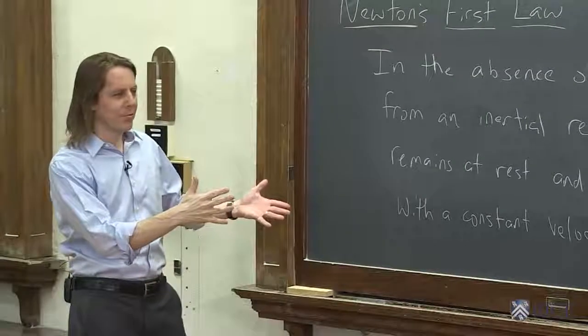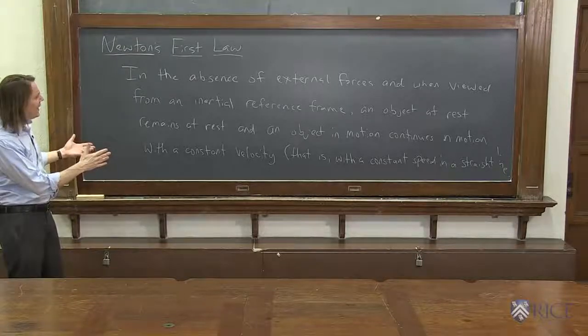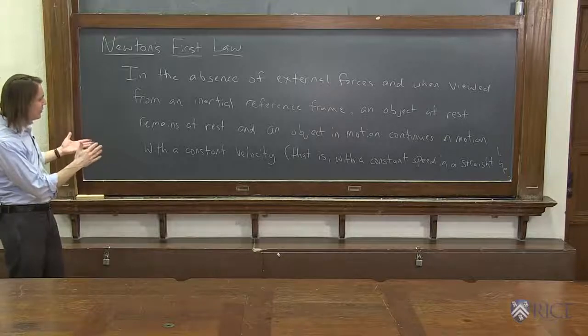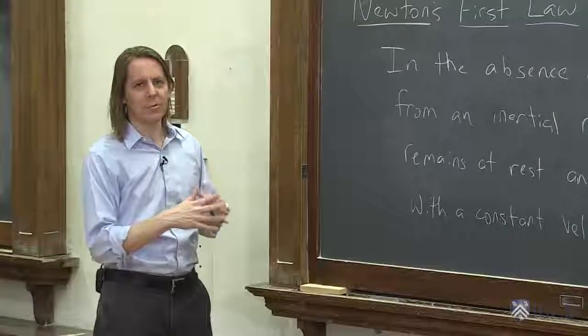This is the book's second attempt at a friendly first law. In the absence of external forces and when reviewed from an inertial reference frame, an object at rest remains at rest and an object in motion continues in motion with a constant velocity. That is, with a constant speed in a straight line.